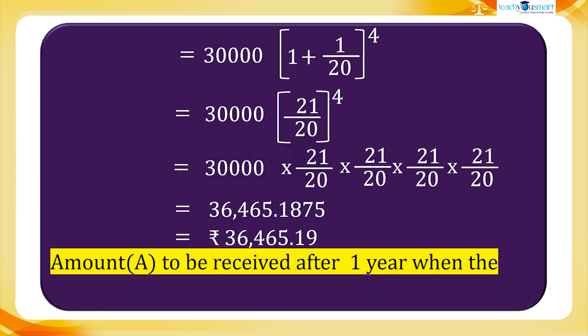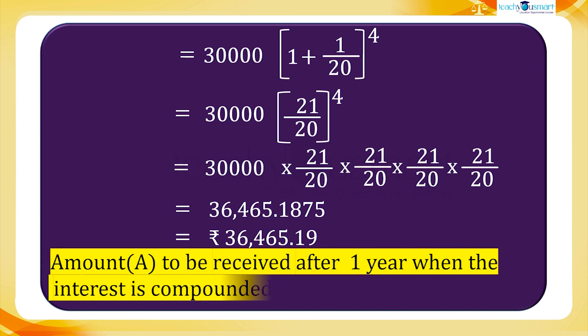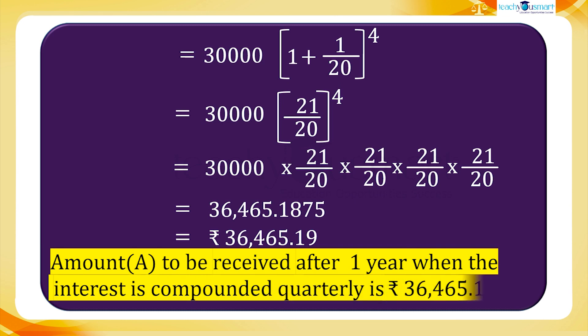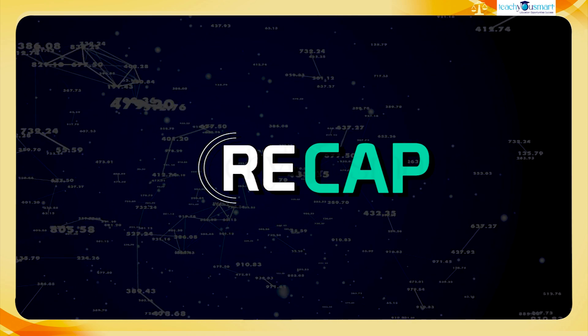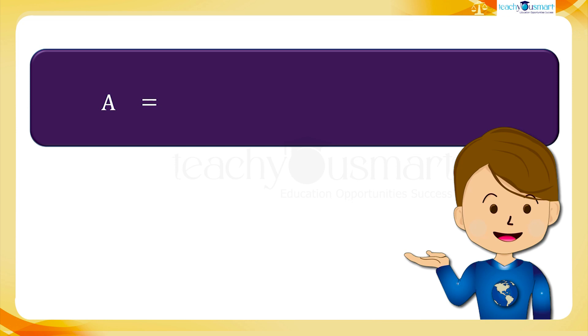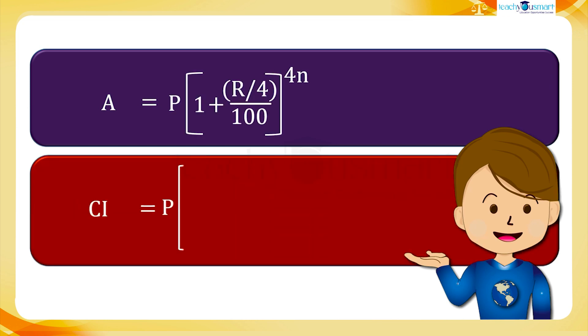The amount to be received after one year when the interest is compounded quarterly is 36,465.19 rupees. Let's have a quick recap. Today we discussed how to calculate the amount and interest compounded quarterly.